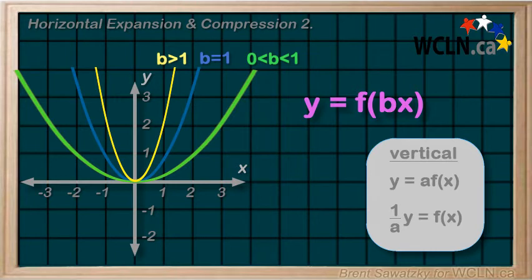If b is greater than 1, then our reciprocal, or our multiplier, is less than 1, and we have a horizontal compression.